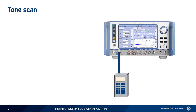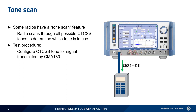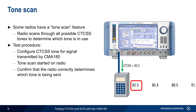A variant of the receive test is testing radios which have a so-called tone scan feature. This feature allows the radio to scan through all possible CTCSS tones to determine which tone is in use. The test procedure is similar to the standard CTCSS receive test: the CMA180 is first configured to transmit a signal with a given CTCSS tone, the tone scan is started on the radio, and the operator confirms that the radio detects, displays, or configures the CTCSS tone being sent by the CMA180.